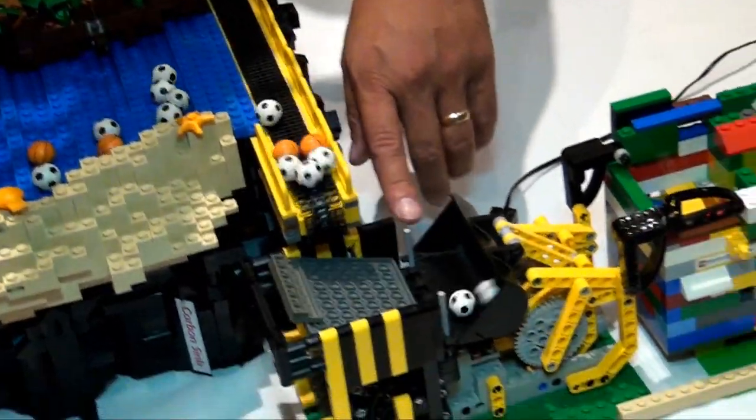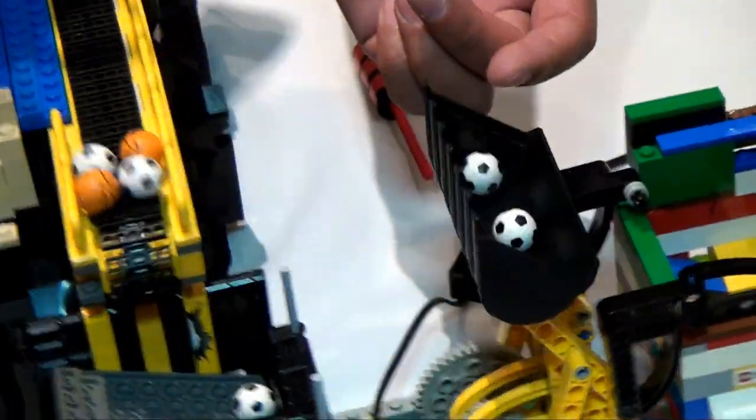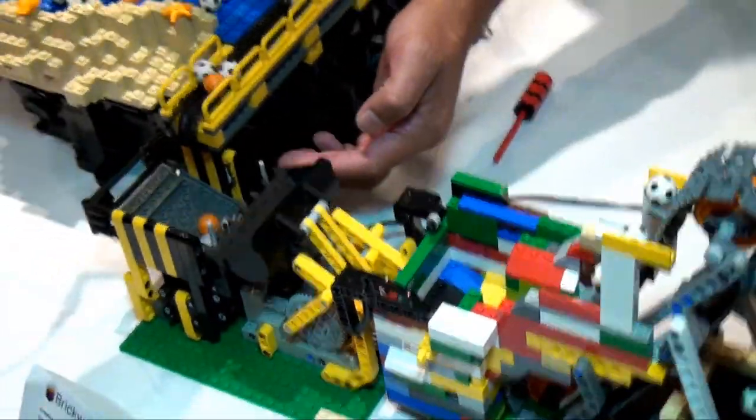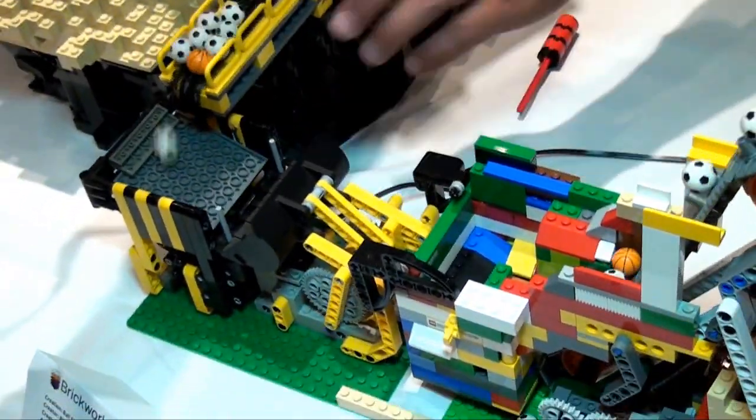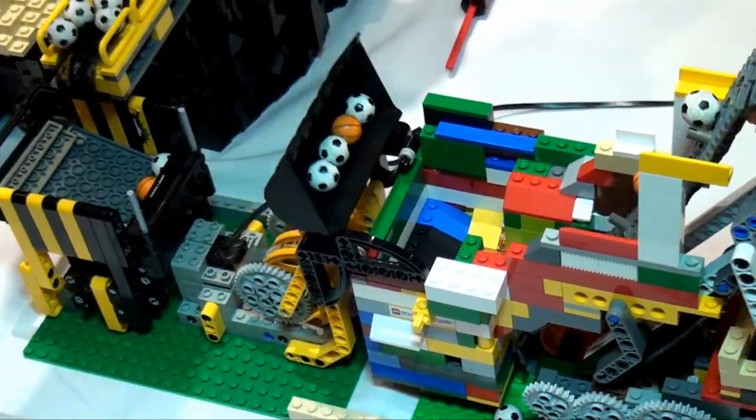And this module here is not mine, but as the scoop comes down, it pushes down on the hopper, which loads the bucket. It flips over and unloads into Harrison's module here.